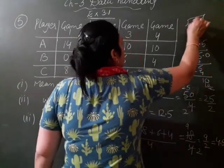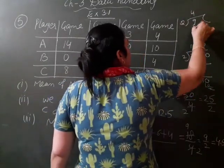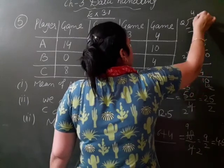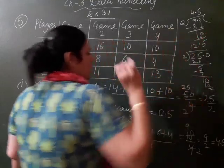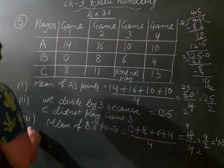So 9 ko jab hain 2 se divide kerti hai, 2 times 4 is 8, 1 decimal laga haiya, 0 li, 2 times 5 is 10, clear?